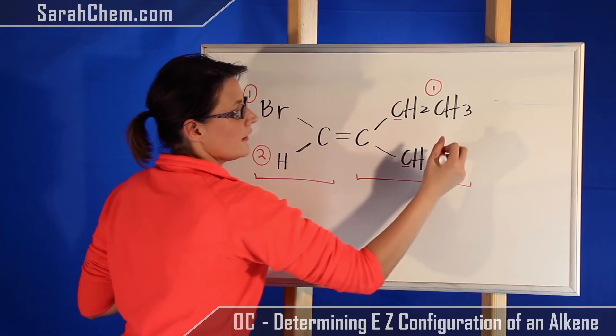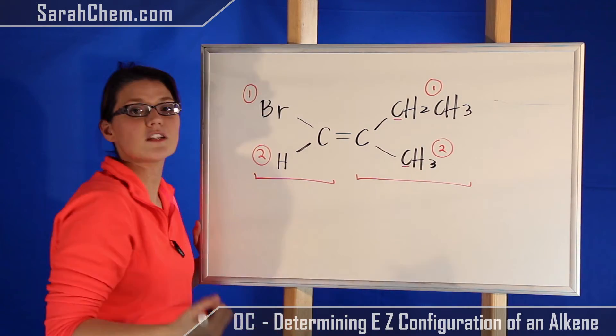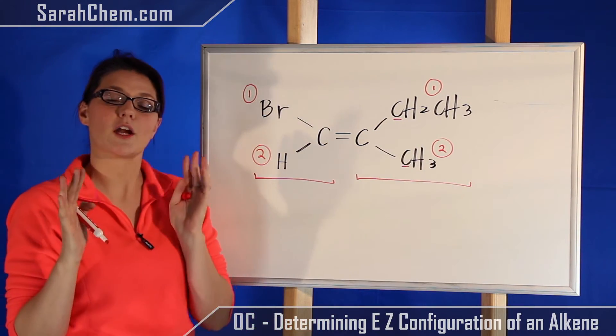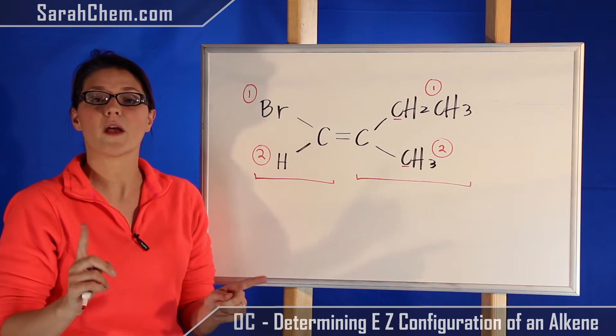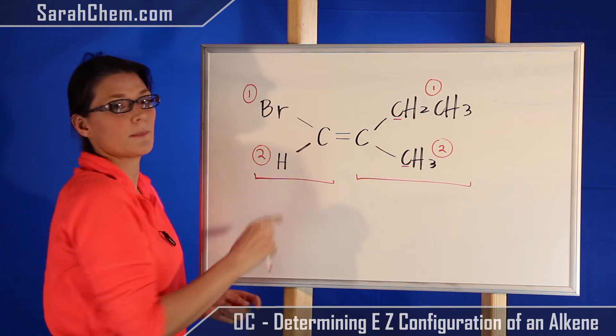leads to a higher priority because its atomic number is greater than H. So over here we know that this is going to be priority one, and then this one would be priority two. So that's how we assign our priorities.